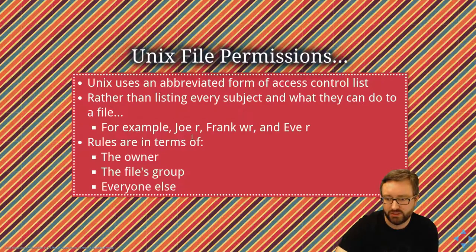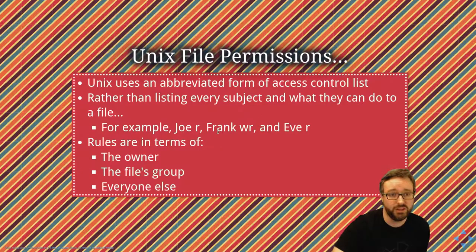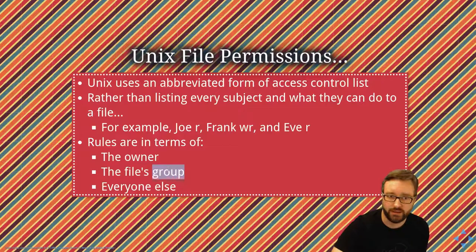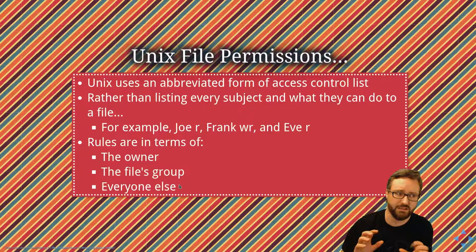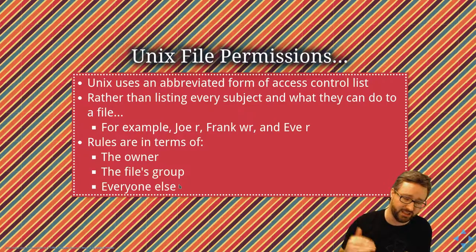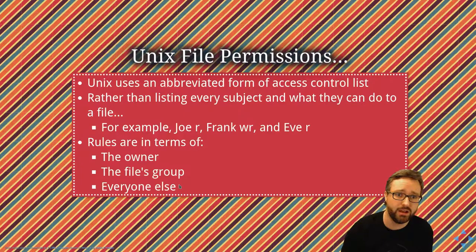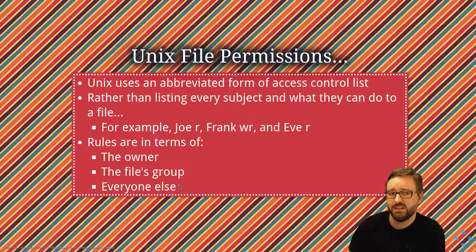Unix uses an abbreviated form of access control list. Rather than listing every subject and what they can do, Unix defines permissions in terms of just three entities: the owner (who owns the file and what they're allowed to do), the group (each file is owned by a group and what they're allowed to do), and everyone else on the system. This means less flexibility compared to Windows ACLs, but it's simplified down to three sets of rules per file. It's actually worked out well for years — you can create groups of users, so it's quite flexible in practice.